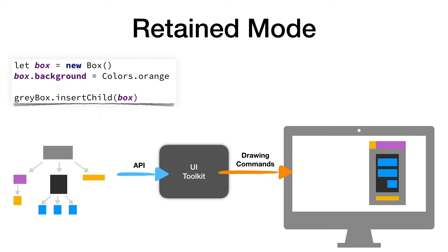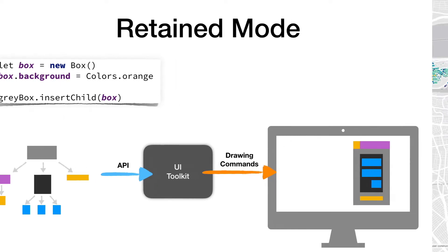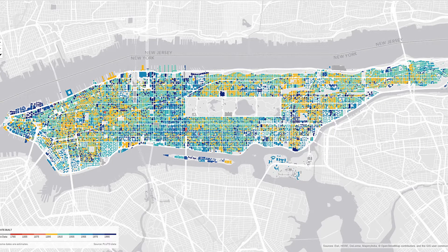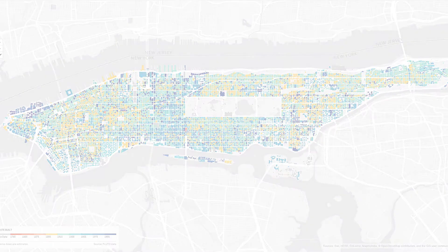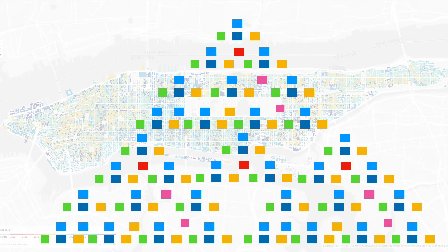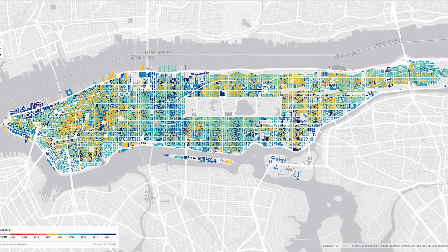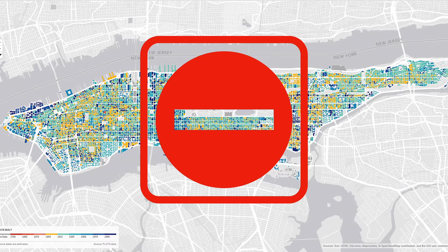The Retained mode approach definitely raises the level of abstraction for creating graphics. But sometimes that may not be good enough for creating really large-scale, high-volume graphics like this map shown here. The object model for this would be gigantic, probably eating up a ton of memory and causing performance issues. This is certainly not the way to create such graphics. It turns out there is a better way — and the answer is Immediate mode.